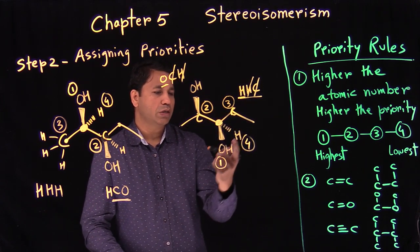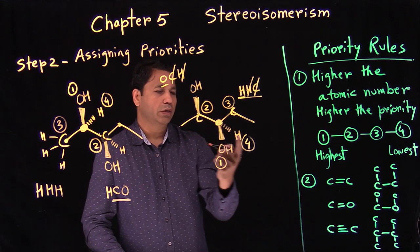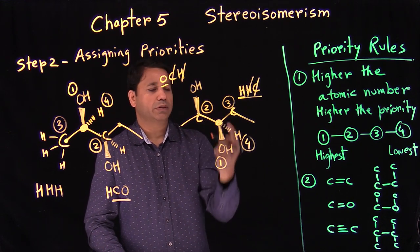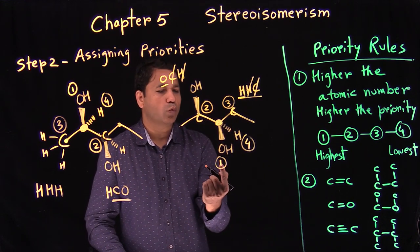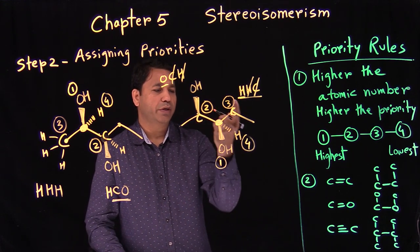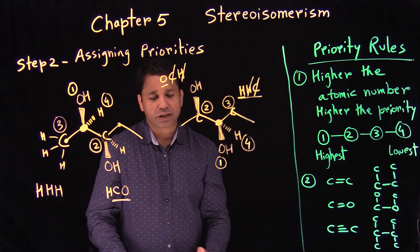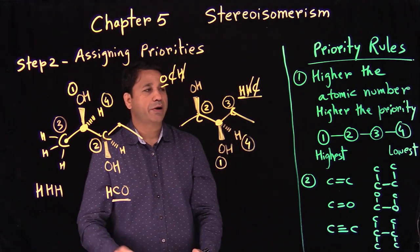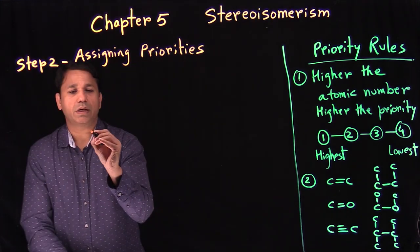So group one is oxygen, group two and three are the carbon chains, and hydrogen always gets number four priority.